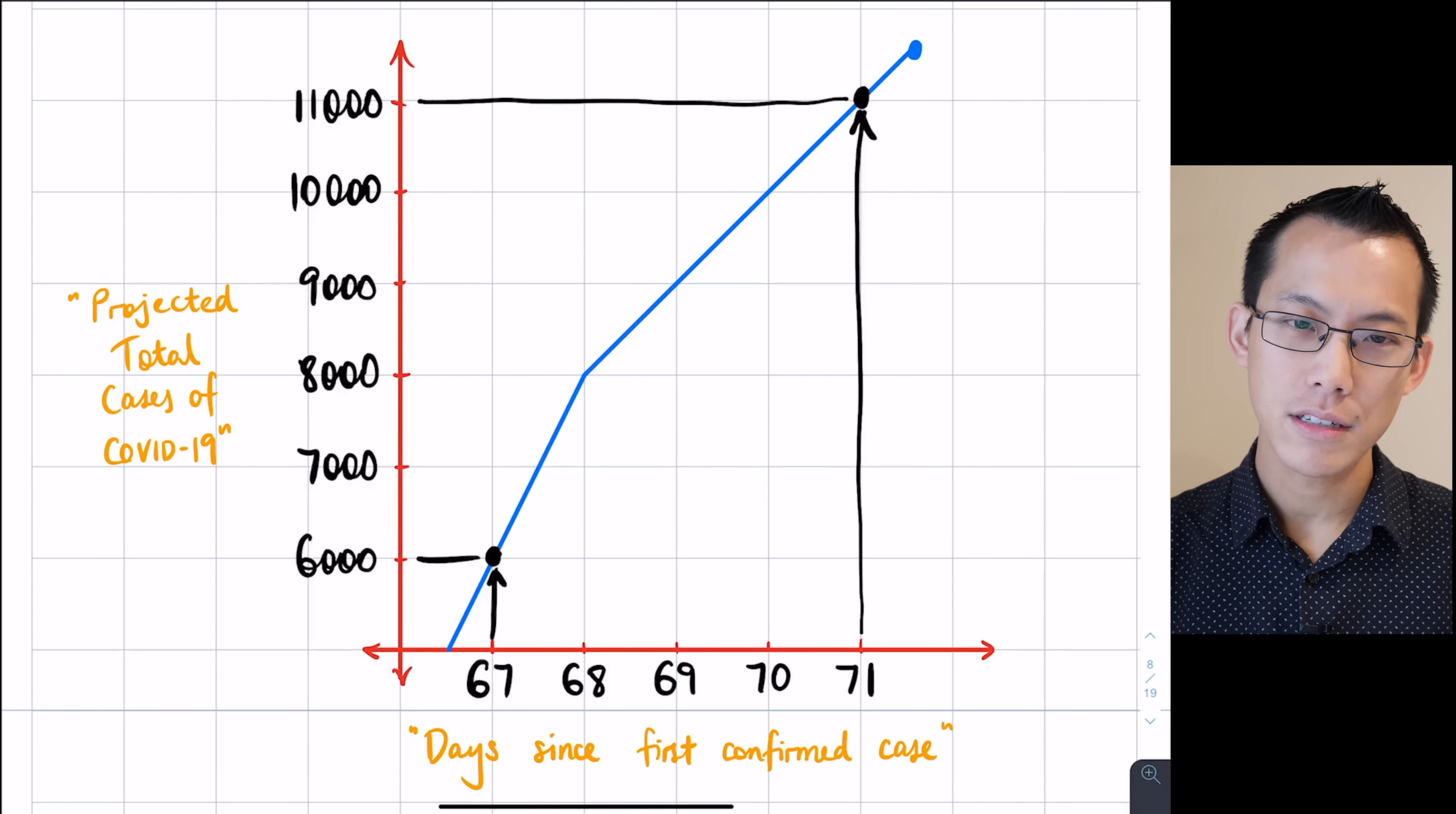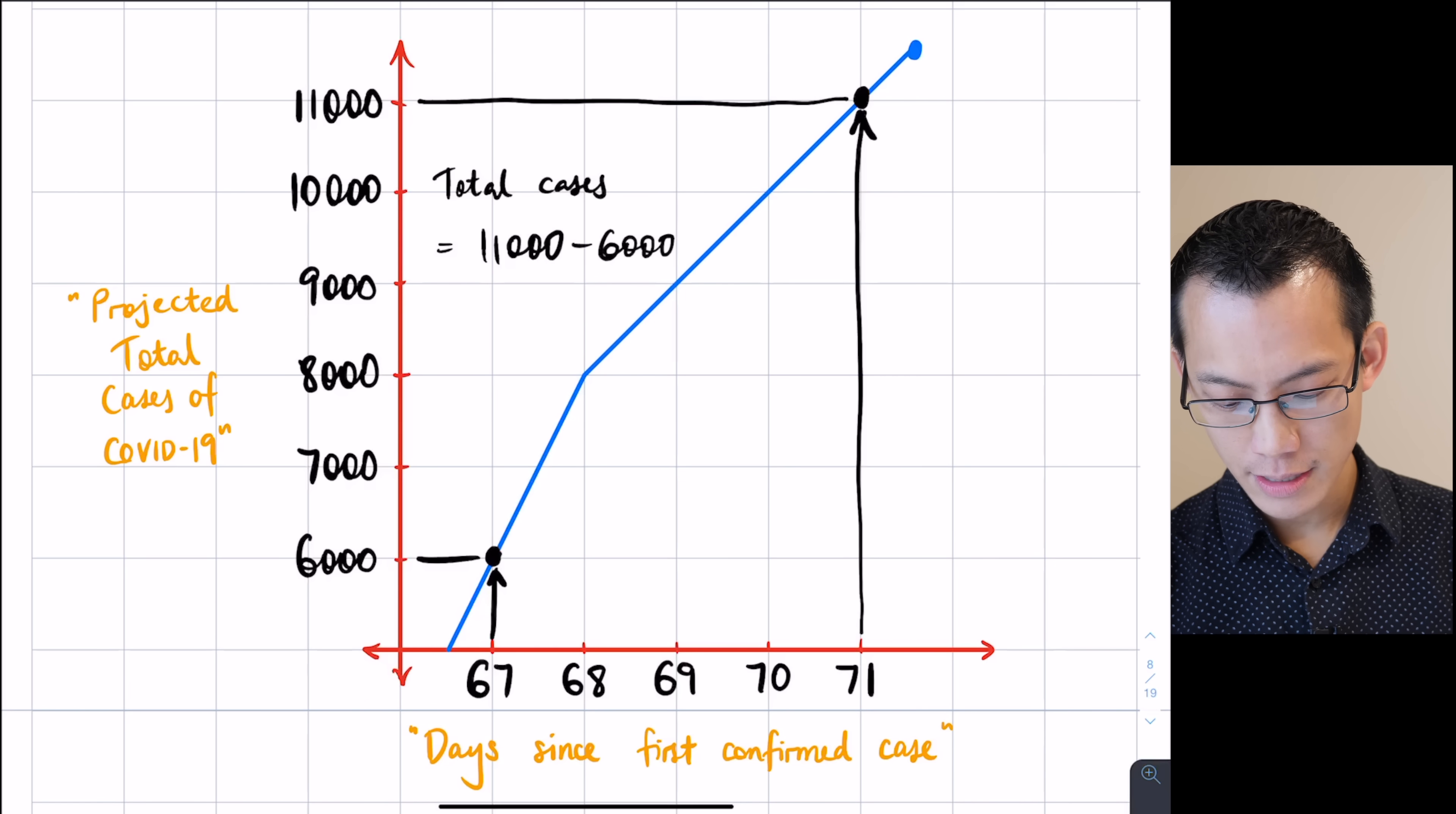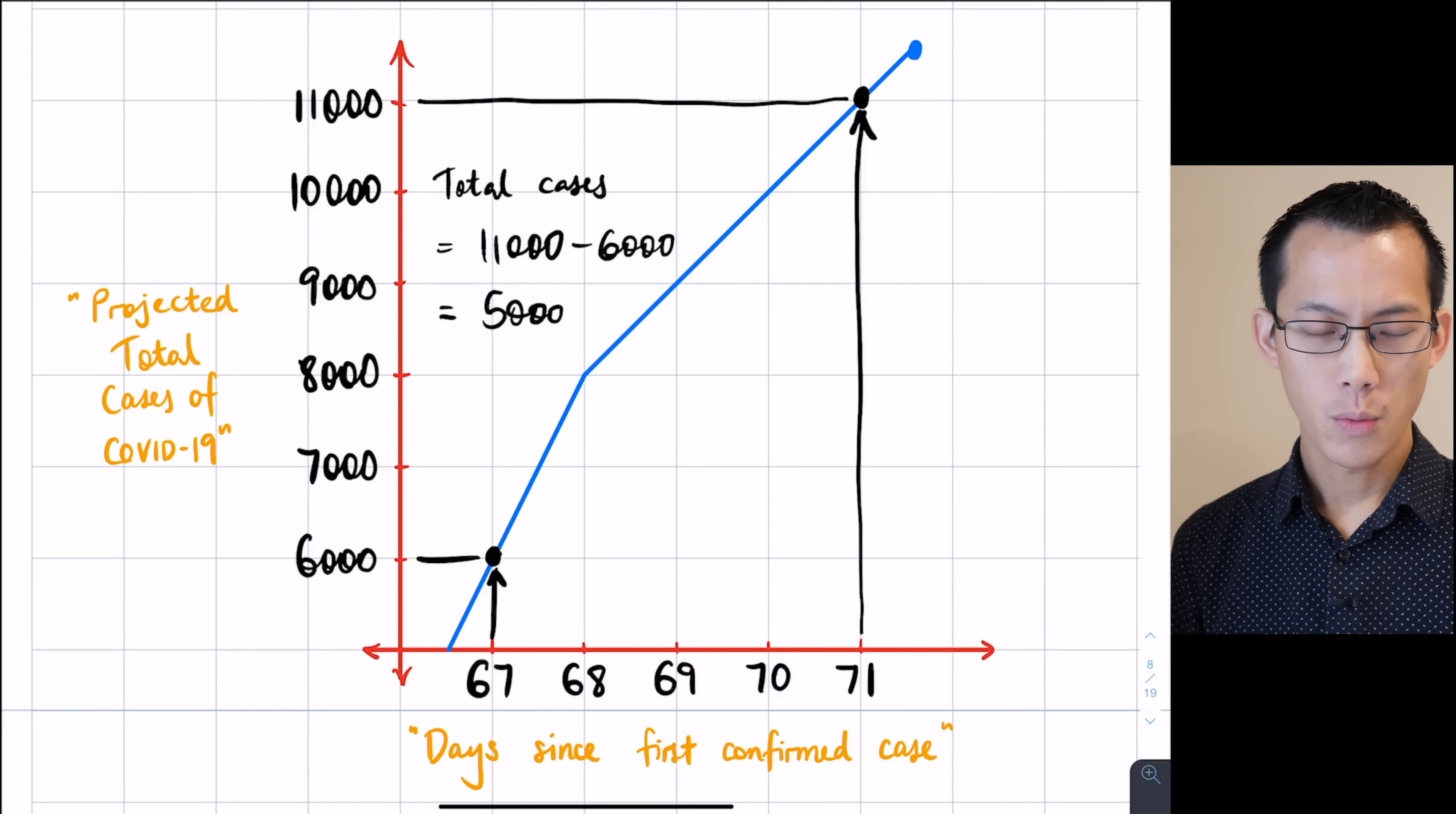So the numbers here are not immensely complicated. What's the total number of new cases? The answer would be, let's see here, I'll just write it in the middle of the graph so you can see it. The total number of cases would be 11,000. Take away the 6,000 that we already have at day 67. So not complicated numbers, 5,000 is the answer we come up with. Now you might think, well, this is a very rudimentary question. It's pretty basic. What is there to gain? Like what does this have to do with calculus?